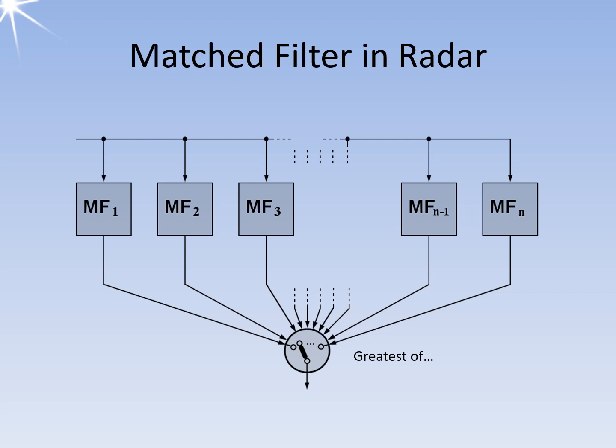Therefore, different matched filters are used in parallel in radar, and then the signal is used with the best signal-to-interference-plus-noise ratio. During further processing, the switch position of the greatest-of-switch is also evaluated. This switch position contains significant details about the characteristics of the echo signal.